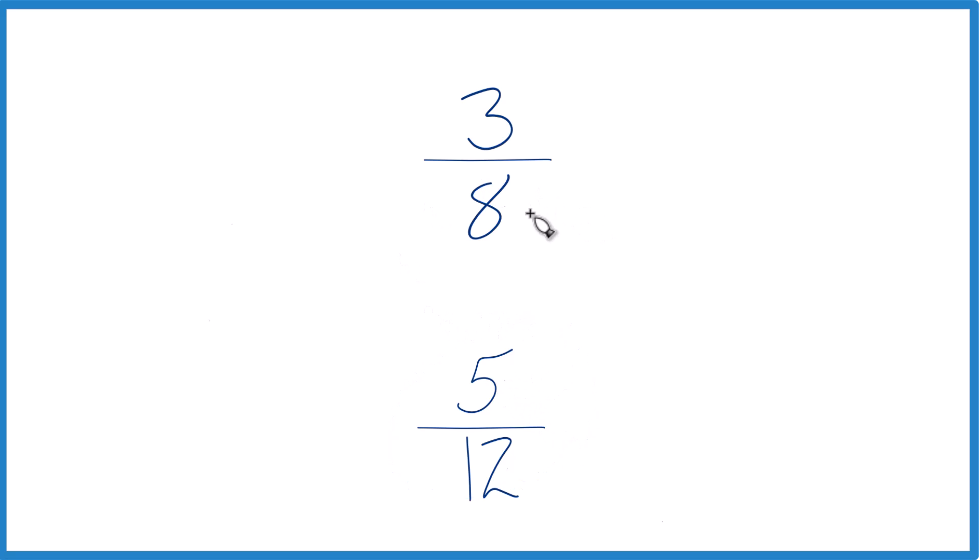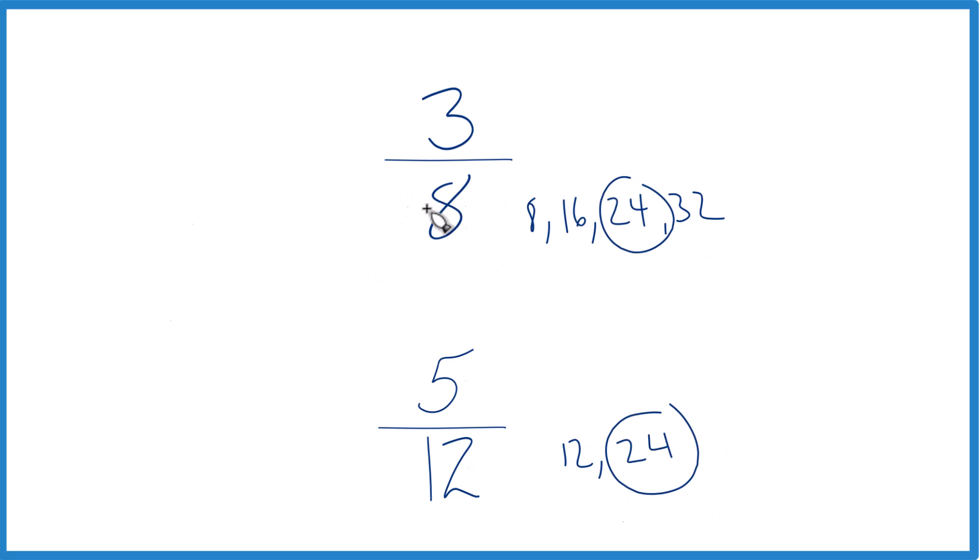Here's another way you could do it, though. If I look at the factors of 8, 8 plus 8 is 16, plus 8 is 24, plus 8 is 32. Down here for 12, we have 12, 12 plus 12 is 24. And actually, there it is. 24 is the common factor. 8 and 12 both go into 24 evenly.